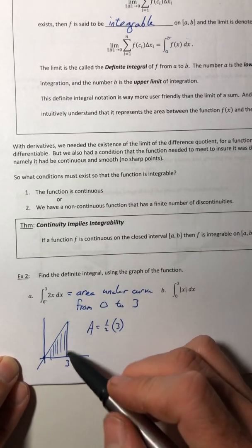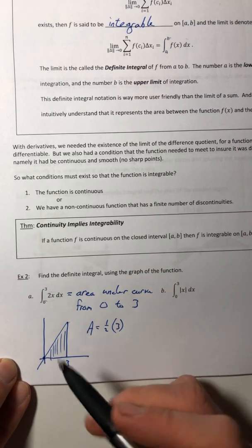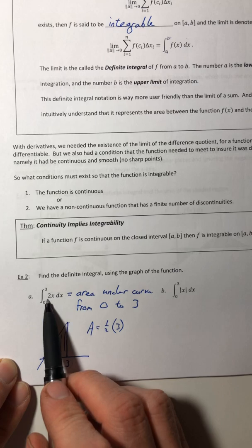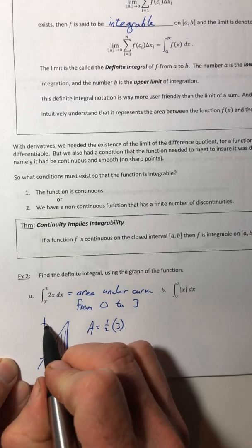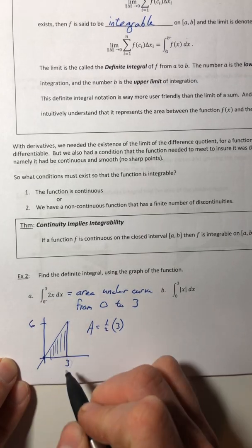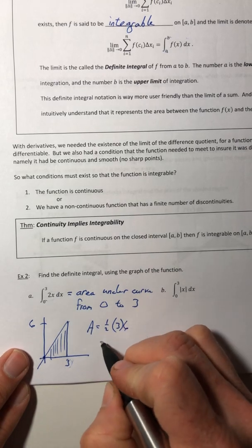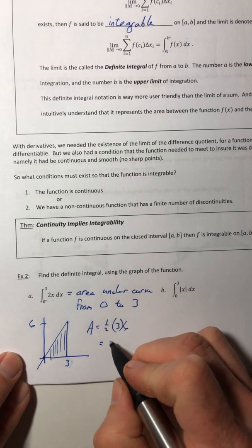Well, how am I going to get the height of that? Well, same way as I did it before. I got to take this x value, this three, stick it into my function, and that'll generate the height or the y value that goes with it. So the height is six, which makes my area nine.